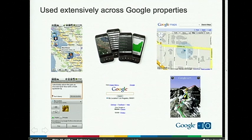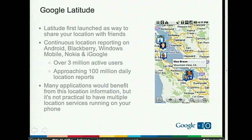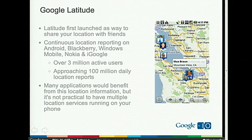I want to talk specifically about Google Latitude. We launched it a little over a year ago. It started off as a way to share your location with friends. You sign in, and by the way you all have Android phones now — opening Google Maps and hitting Join Latitude from the menu will get you started. You can add people you trust to share your location with. Your phone will report your location to them continuously. There are privacy controls to share only the city or turn it off at night.